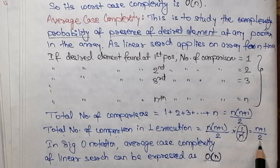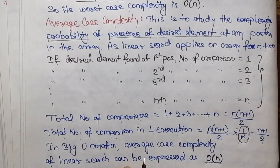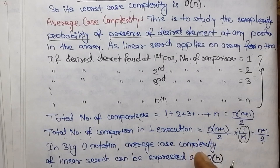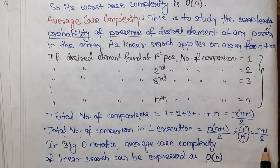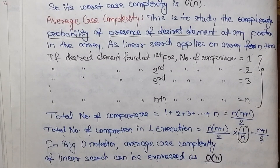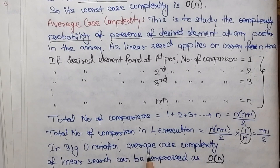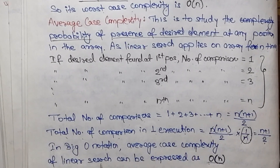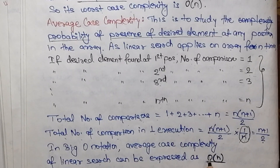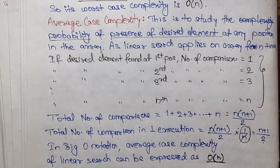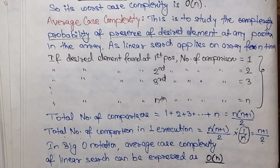For one execution, we divide by n: the n's cancel and it comes out to be (n+1)/2. So on average, the number of comparisons that may take place is approximately half the total number of elements in the array. In Big O notation, the average case complexity of linear search is expressed as O(n).